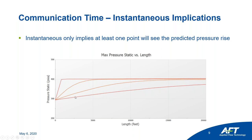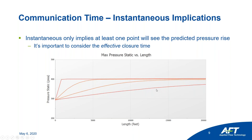With a 15-second closure — non-instantaneous by definition — we still see the Joukowsky pressure rise. With a 30-second closure, the longer we close the valve, we can reduce the surge pressure and also the amount of pipe seeing that surge. This comes down to effective closure time. With our 5-second closure looking closer to 75% of pipe affected rather than the expected 50%, and a 15-second non-instantaneous closure still showing the full Joukowsky rise — it really comes down to effective closure time, which is easier to explain by showing it in the software.